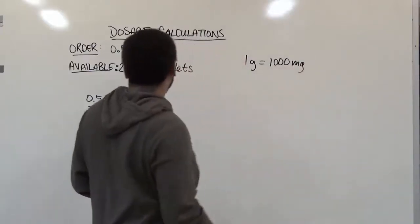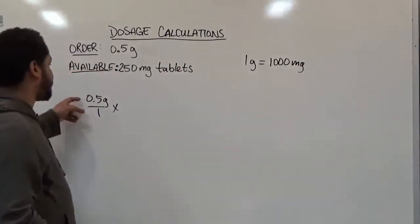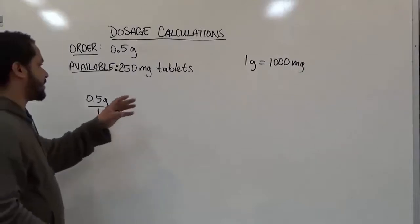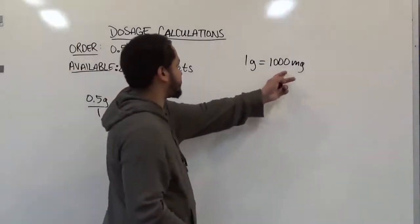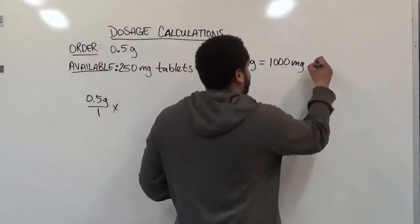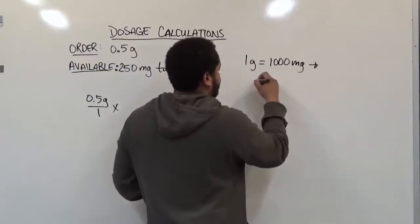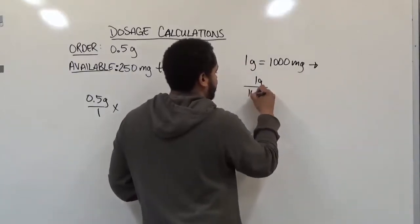Knowing this, we can convert the value of 0.5 grams over 1 to any other value. We're going to use this as our conversion factor where we have 1 gram to every 1,000 milligrams.